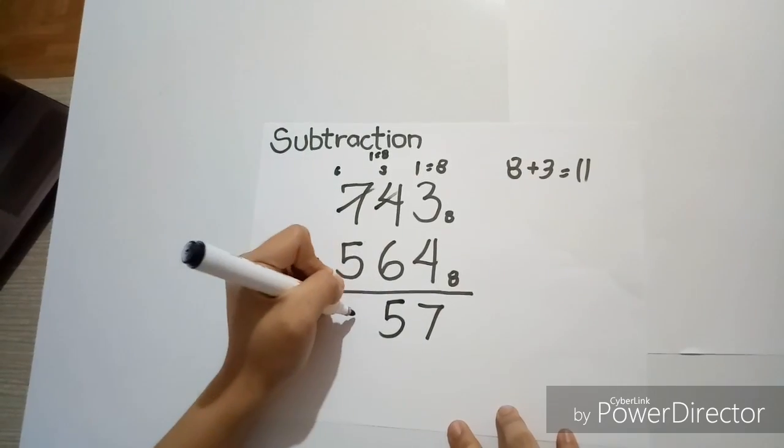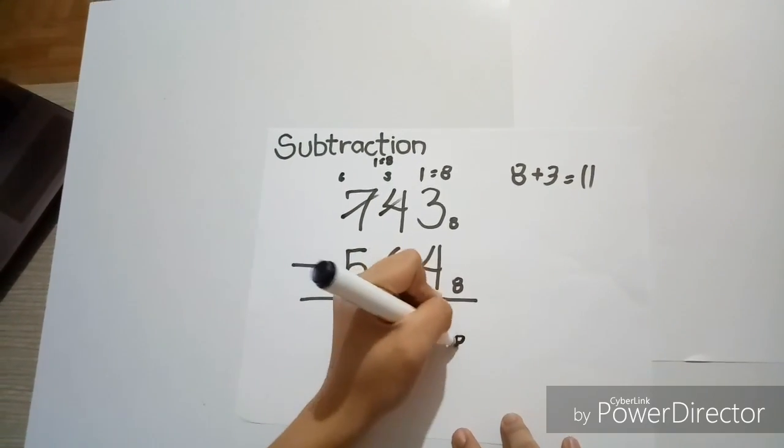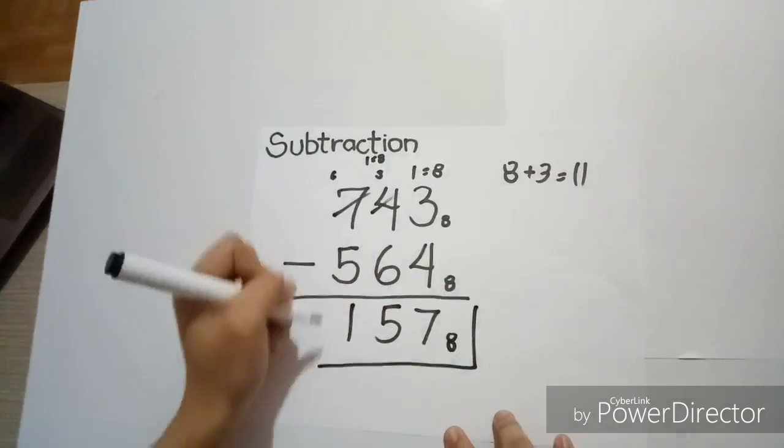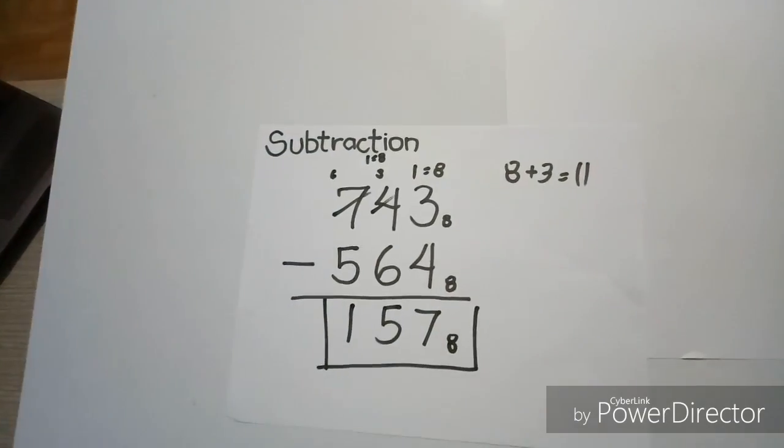Then, 6 minus 5 is equal to 1, which gives us the final answer, 157 base 8.